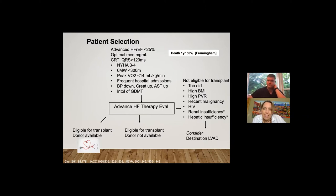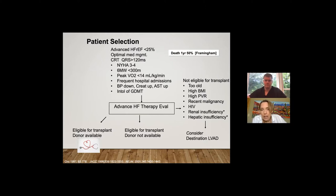Whenever someone is considered for advanced therapies, we always consider them for a heart transplant first. This list of comorbidities represents common reasons why people will not be considered for transplant and will go directly to VAD. About 50% of people who get a heart transplant are transplanted from a VAD — we use VADs as both bridge to transplant and for destination therapy. Destination therapy is for those ineligible for transplant. The age cutoff for transplant is 70, but a high BMI can sometimes be addressed with bariatric surgery after the VAD to make someone a transplant candidate.